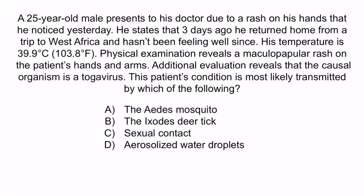B is a reference to several organisms such as Borrelia burgdorferi, Babesia, and Anaplasma, but none of these are togaviruses, so B is incorrect. C and D are true of many pathogens, but not of togaviruses, so they're incorrect as well.